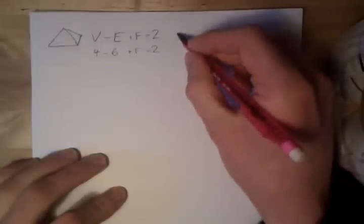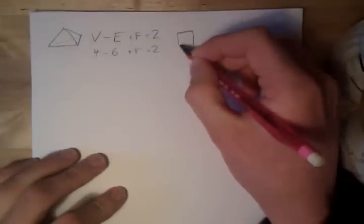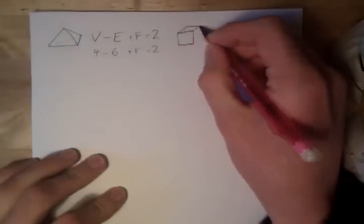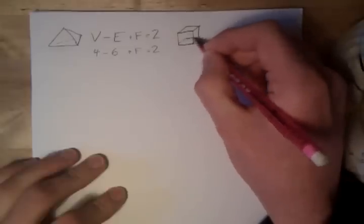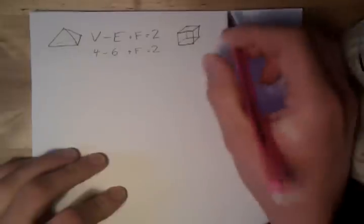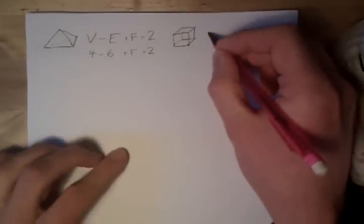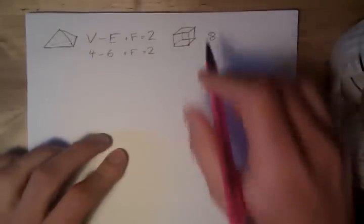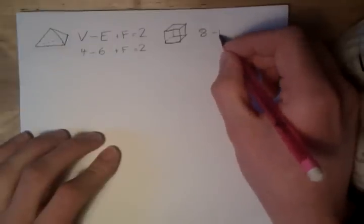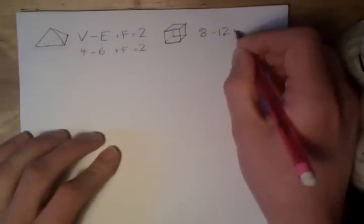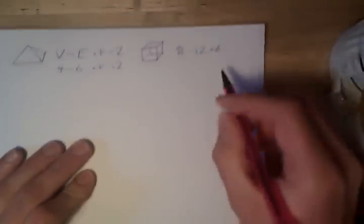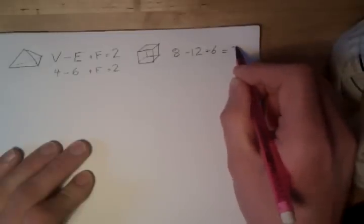Let's try it for some other polyhedra. Let's try it for the cube. Okay, so we've got 8 vertices, we've got 12 edges, and we've got 6 faces, so V minus E plus F is indeed equal to 2, which is nice.